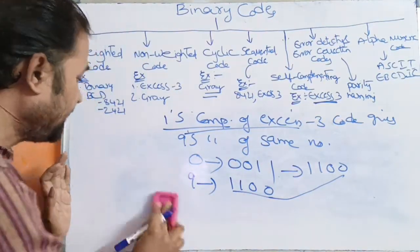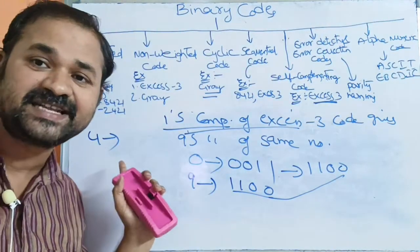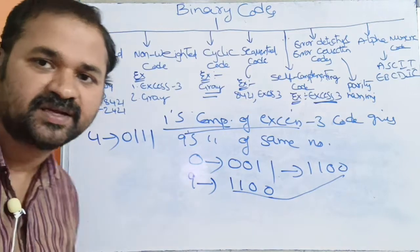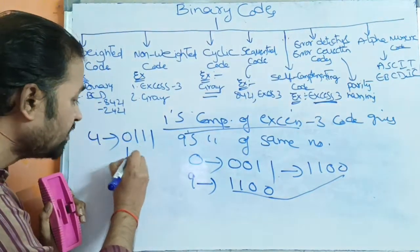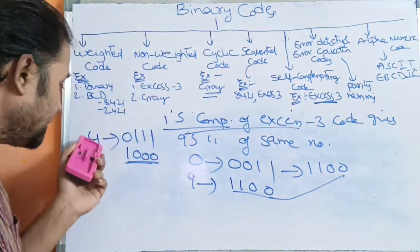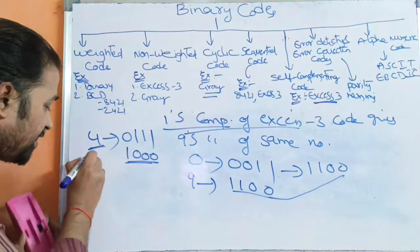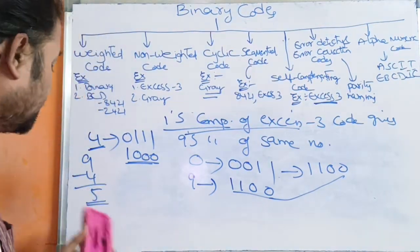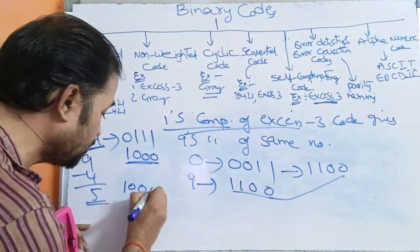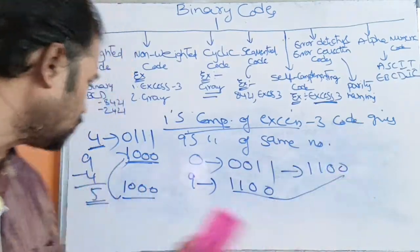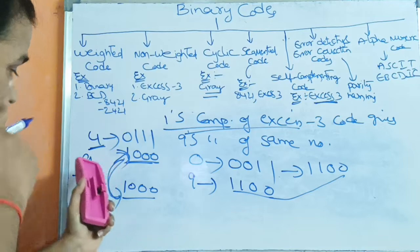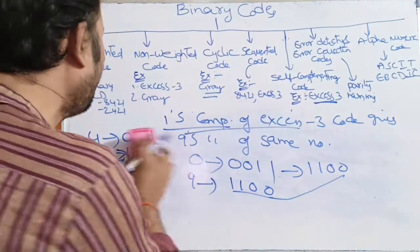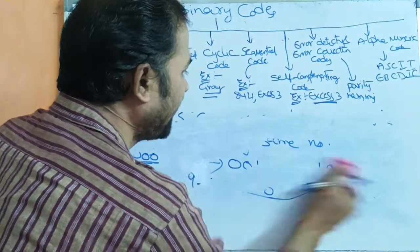Let us take one more example. Let us take 4. What is the XS3 for 4? 4 plus 3 means 7, and 7 means 0 1 1 1. What is the 1's complement of 0 1 1 1? It is 1 0 0 0. It will give the 9's complement of the same number. The 9's complement of 4 is 9 minus 4 = 5. 5 in XS3 notation means 5 plus 3 = 8, which is 1 0 0 0. So these two are equal. That is about self-complementing code — the best example is XS3 code.